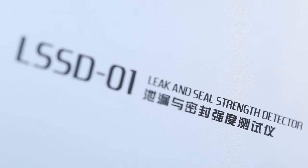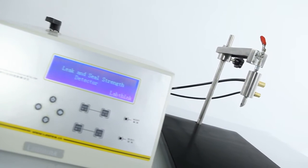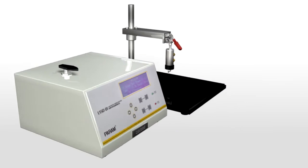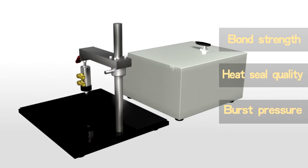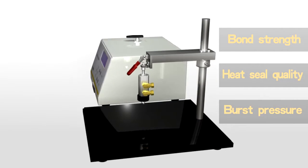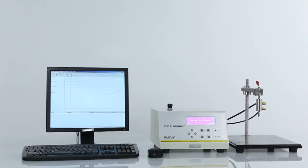LSSD-01 is a leak and seal strength detector that adopts the positive pressure method. It is broadly used for the quantifiable measurement of bond strength, heat seal quality of heat seal edges, and burst pressure of flexible packages which are produced by heat seal processing and adhesive processing.